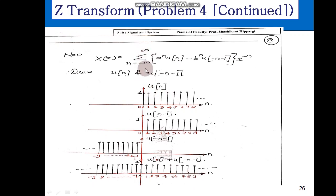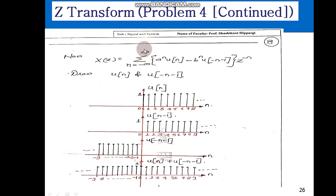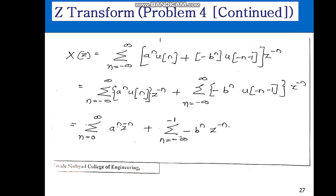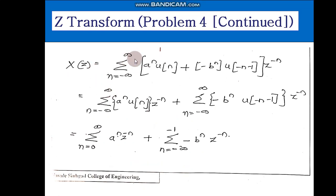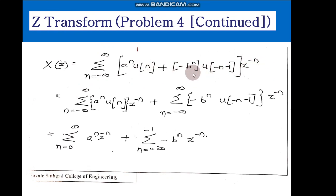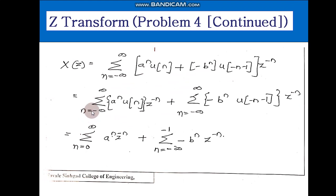So our formula will now run from minus infinity to plus infinity. In the previous cases this was either from 0 to infinity or from minus 1 to minus infinity. Now we have: sum from minus infinity to plus infinity of [a raised to n u(n) minus b raised to n u of minus n minus 1] times z to the power of minus n. This summation can be split and applied to each term separately.